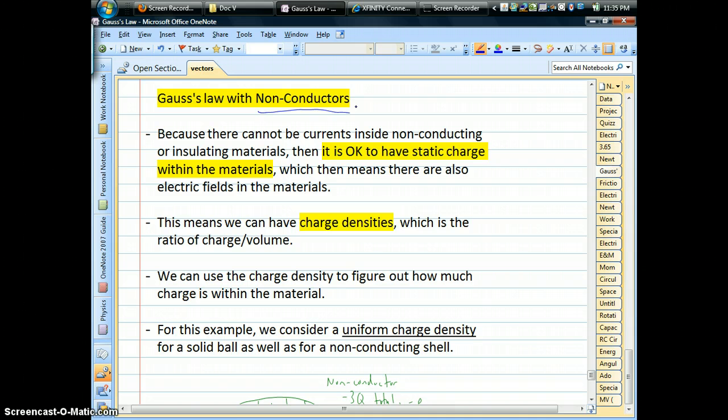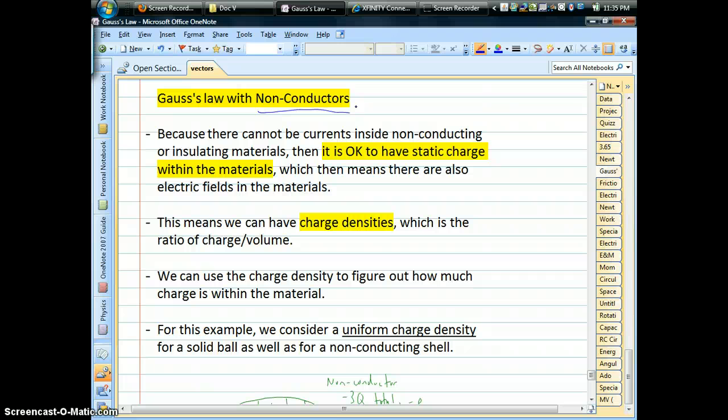This will be the case where you have solid non-conductors, solid insulating materials, which by definition cannot have currents. So what's different about non-conductors versus conductors? Conductors can have currents, and if you're talking Gauss's Law and static charge, there can't be any electric fields inside conductors.